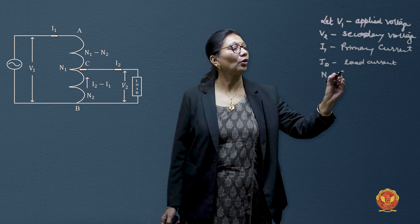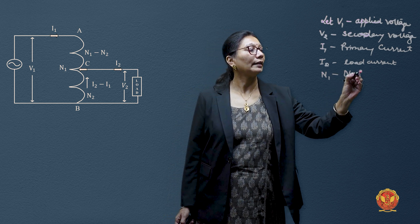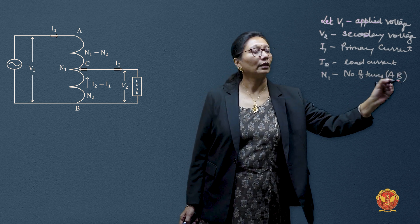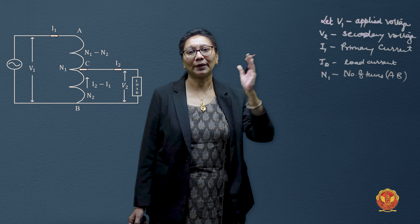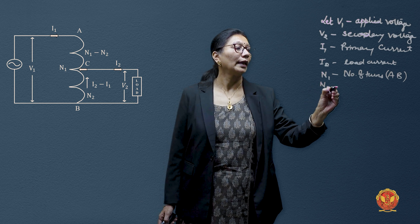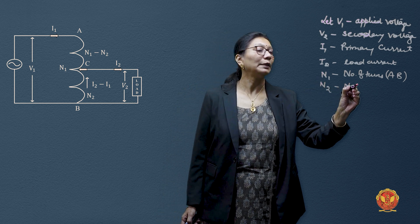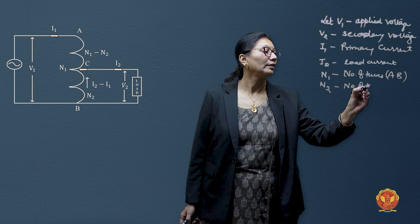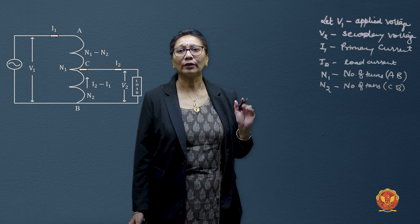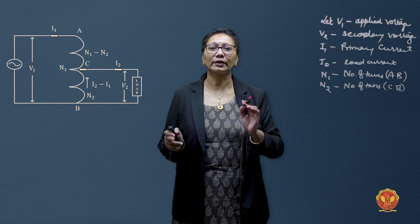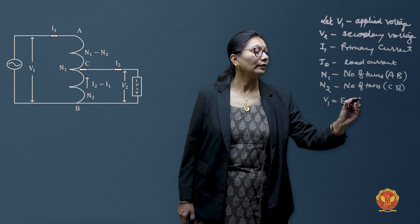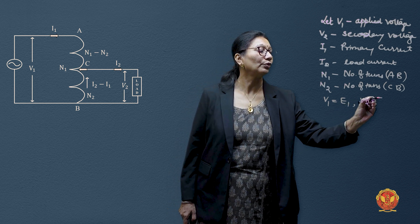N1 is the number of turns between points A and B, which is the primary supply winding. N2 is the number of turns between points B and C, where C is the tapping available on the secondary side. Neglecting no-load current, leakage reactances, and losses, we can say V1 equals induced EMF E1 and V2 equals induced EMF E2.